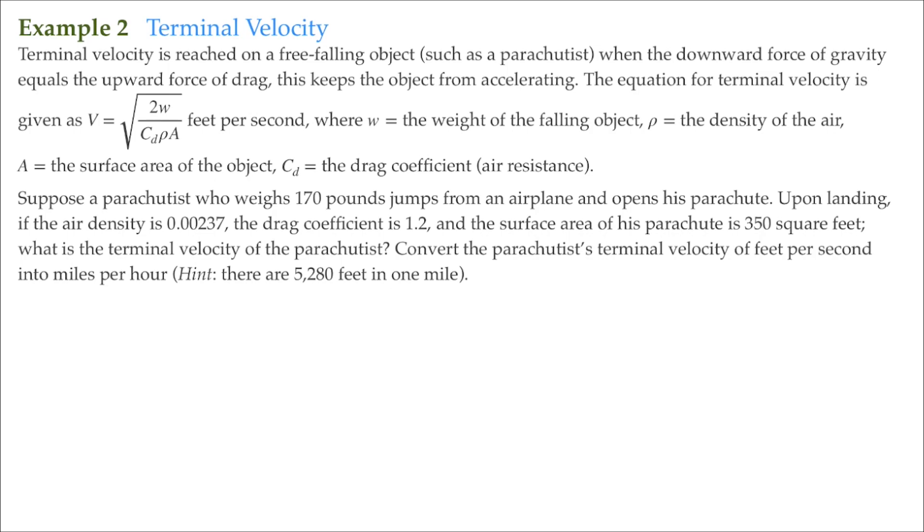Suppose a parachutist who weighs 170 pounds jumps from an airplane and opens his parachute. Upon landing, if the air density is 0.00237, the drag coefficient is 1.2, and the surface area of his parachute is 350 square feet, what is the terminal velocity of the parachutist?